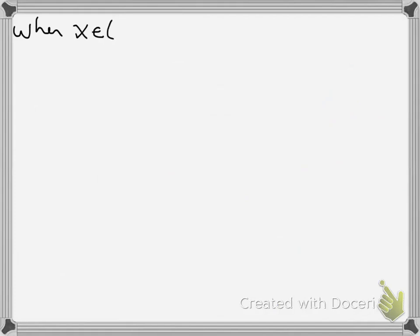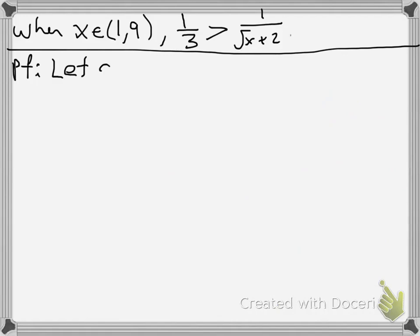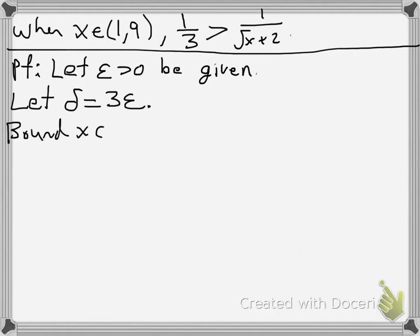It says when x is an element of the open interval 1 to 9, we have this inequality, the one I highlighted. So if we go ahead and we do our proof, we'll say let ε > 0 be given. And I'm going to let δ equal 3ε. Since x is bounded, it belongs to the set 1 to 9. If 0 < |x - 4| < 3ε, and that's our delta, then...